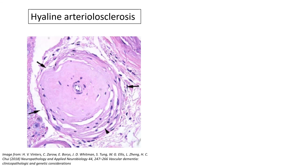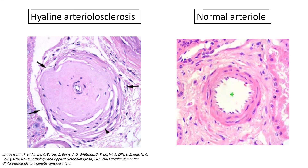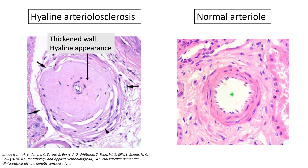This is the histological picture of hyaline arteriolosclerosis. As you can see here, compared to the normal arteriole, the wall is thickened with a hyaline appearance, there is an absence of muscle cells, and the lumen is narrowed.